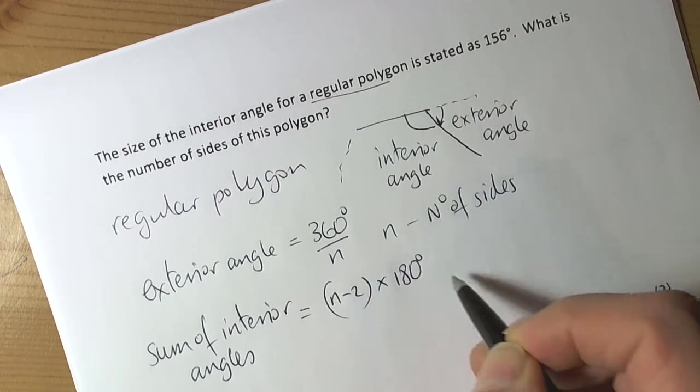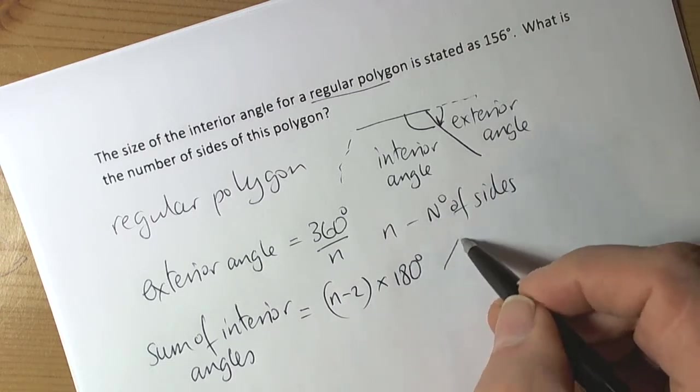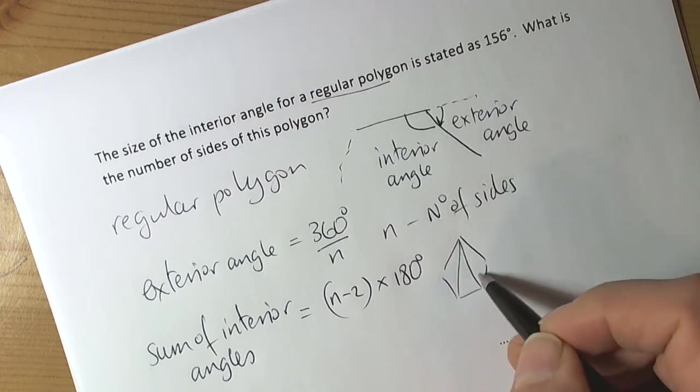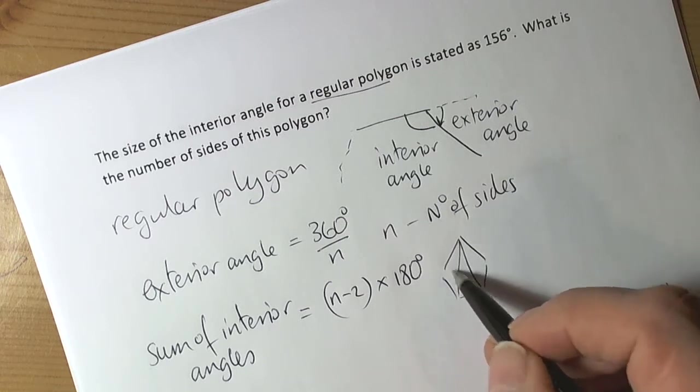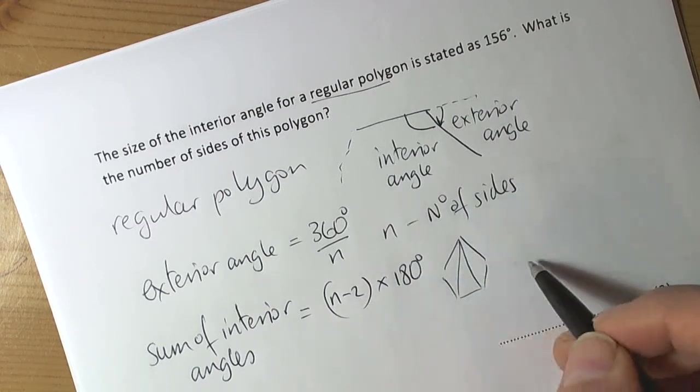If I had a pentagon, I can make a minimum of three triangles. Each of those triangles has 180 degrees in it. To get the three: five-sided shape for a pentagon, take away two gives me three. Three times 180 gives me 540 degrees for inside there.